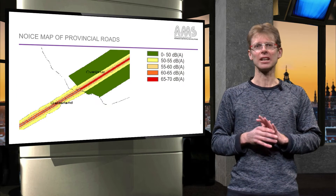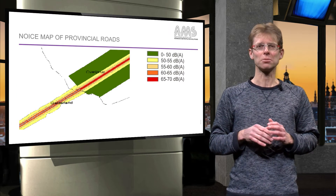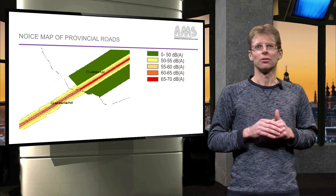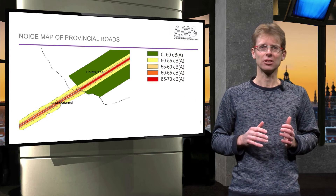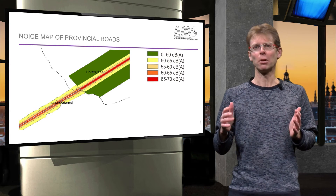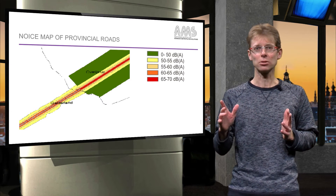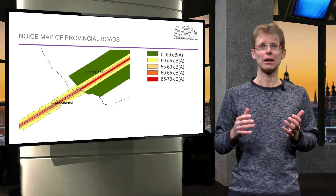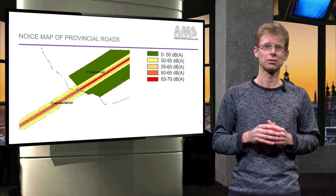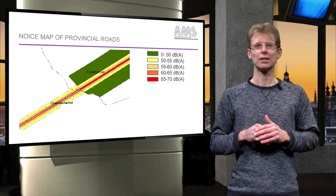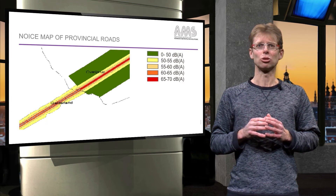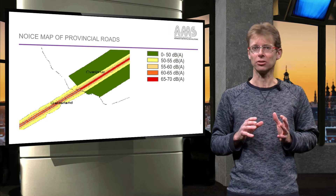An example of this lack of interoperability is the noise map of the Dutch provinces. Various provinces use different definitions to map the noise along the freeways. If someone wants to use this data at the national level, how does he decide how much noise pollution there is along the Dutch freeways? Using the data provided by the different sources, it is hard to obtain a complete picture of the actual situation.